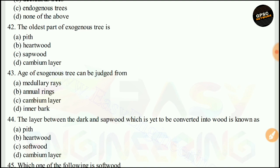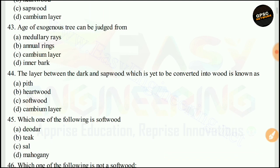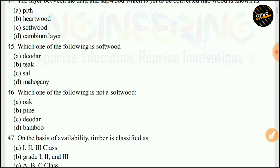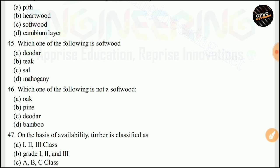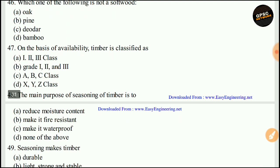Trees whose leaves fall in autumn and new ones appear in spring are classified as deciduous trees. The right answer is B. The oldest part of an exogenous tree is called the pith. The right answer is A. The age of an exogenous tree can be judged from its annual rings. The right answer is A. The layer between the bark and the sapwood, which is being converted into wood, is known as the cambium layer. The right answer is D.